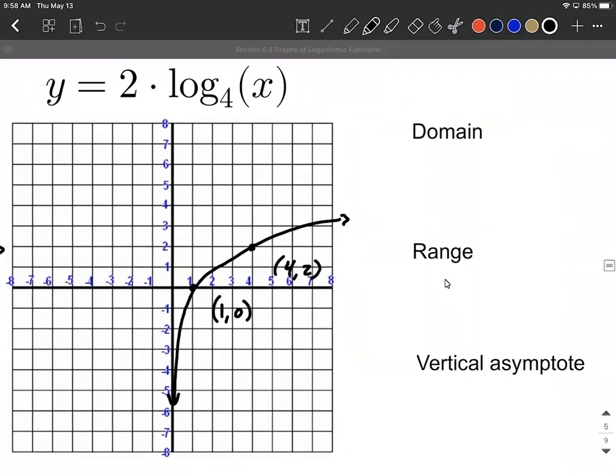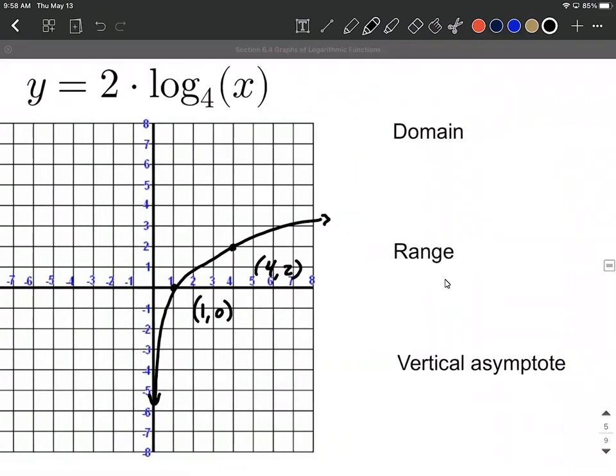And then let's identify the domain range and vertical asymptote. So as you can see from our graph, our domain, it's only positive values or to the right of zero. We never quite get to zero because that's where our vertical asymptote is going to be located. And the range for each one of these is going to be from negative to positive infinity.